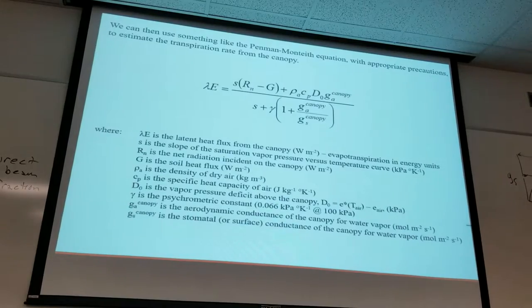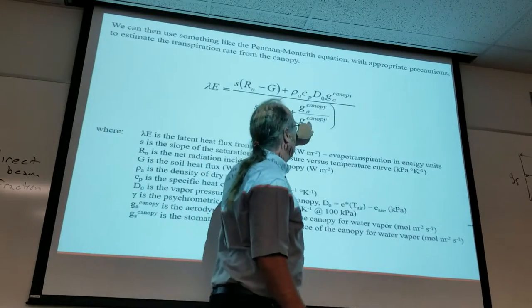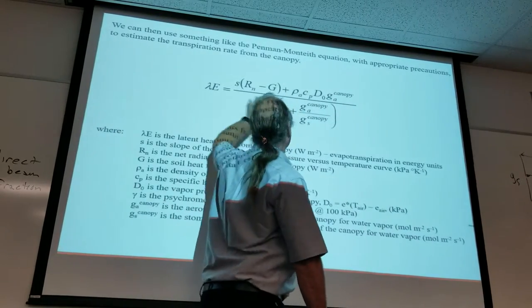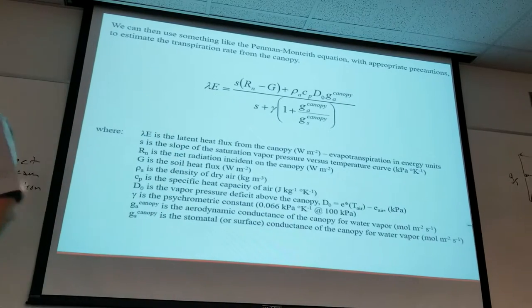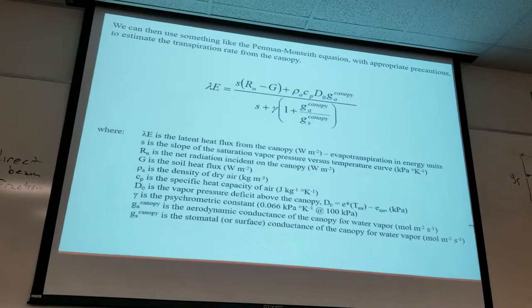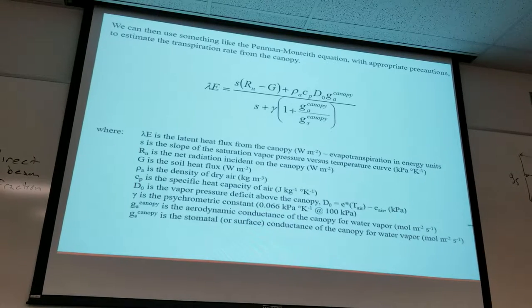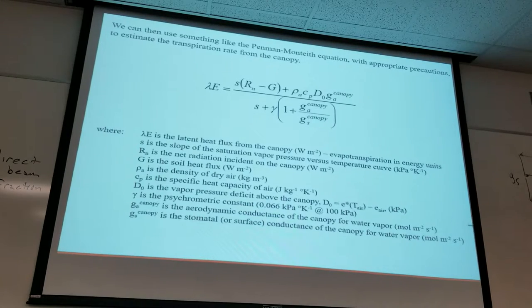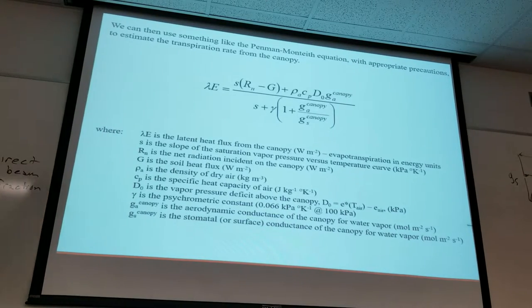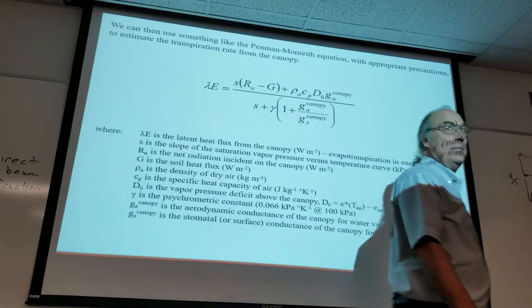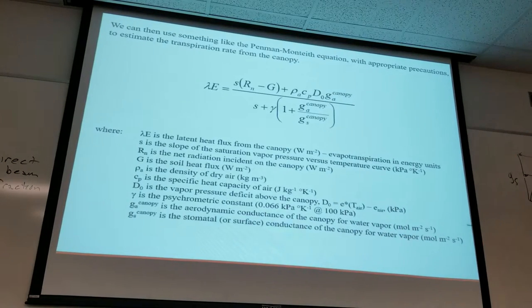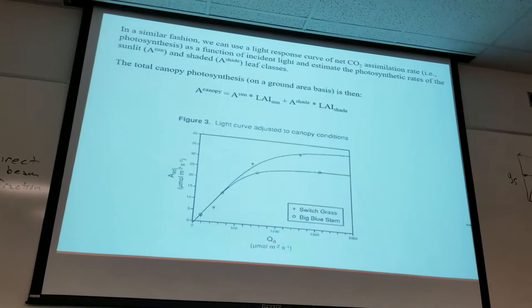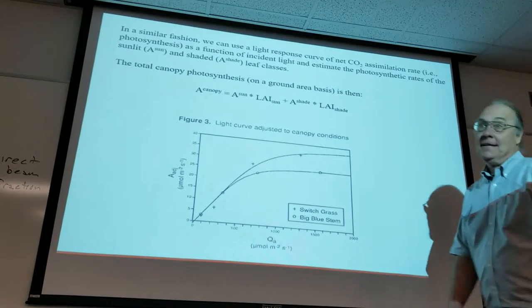Just those two conductances weighted by the proportion of leaves in both classes. And that gives us a canopy stomatal conductance term that's appropriate for use in, say, Penman-Monteith. So we can stick that term here and measure all the rest of these things and estimate transpiration from plant canopy based on what we know about stomatal conductance and the effect of light on stomatal conductance. And that's it.